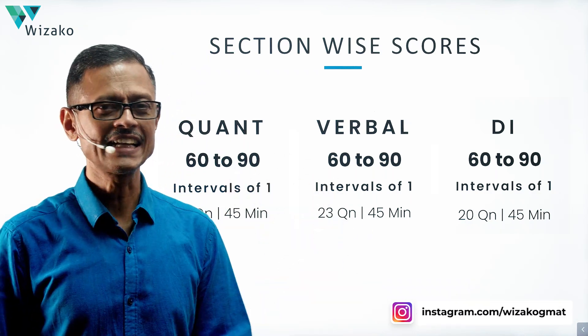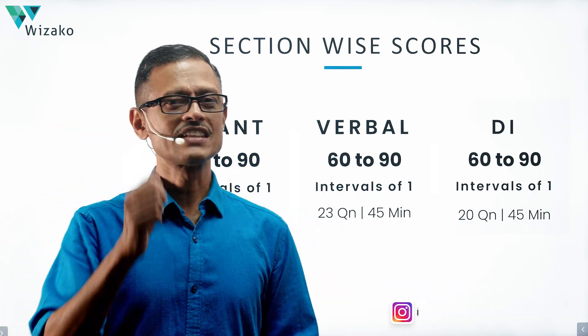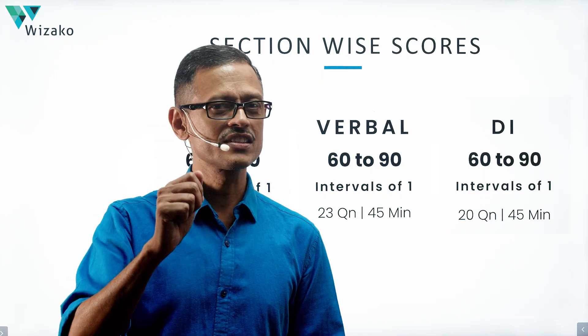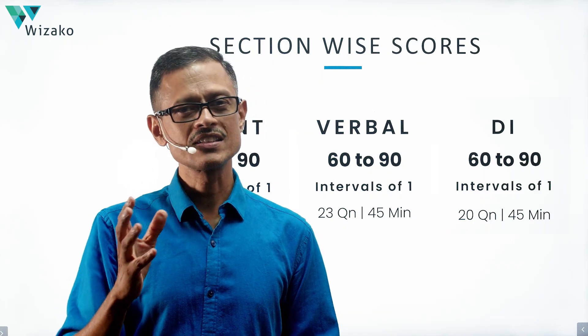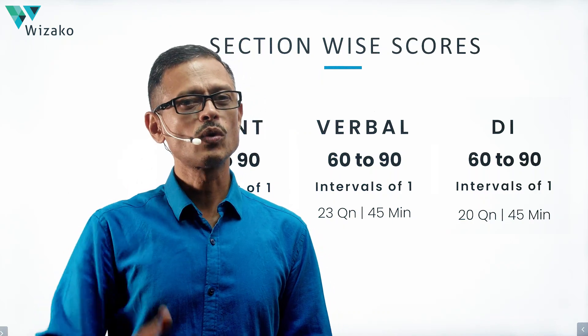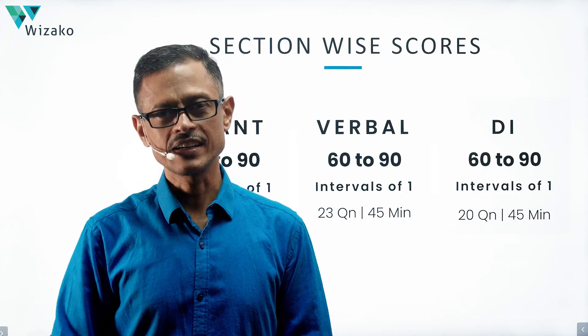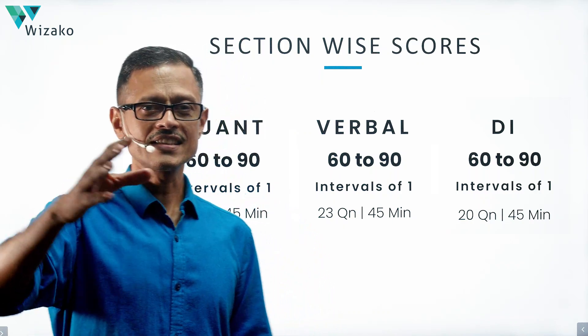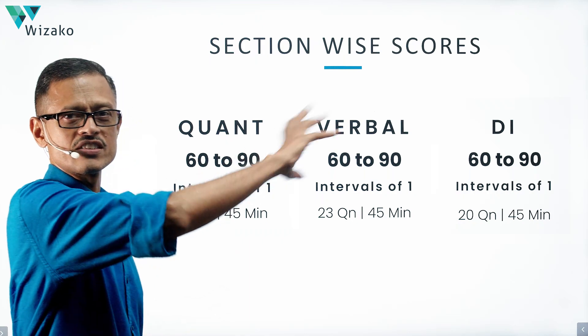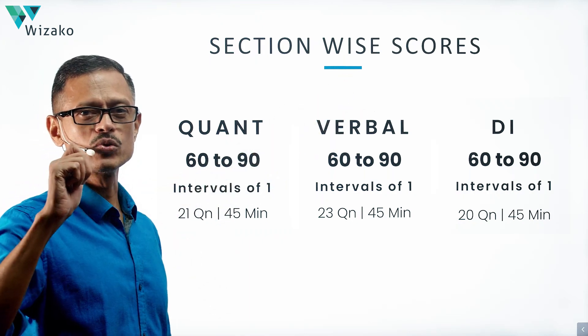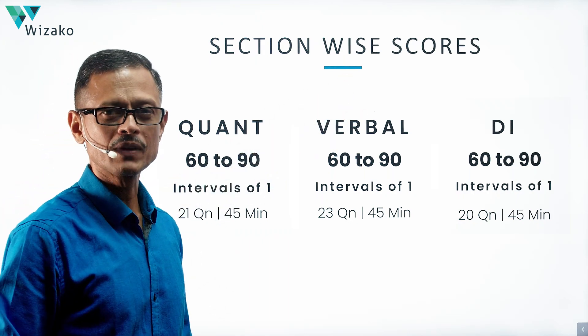Lastly, the new section — Data Insights — requires you to answer 20 questions in 45 minutes. That's about two and a quarter minutes per question. So these are the three sections, each scored from 60 to 90, moving in intervals of one.